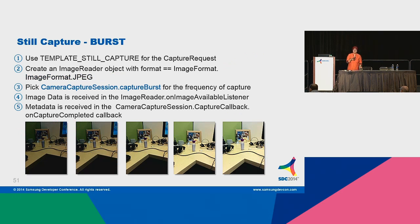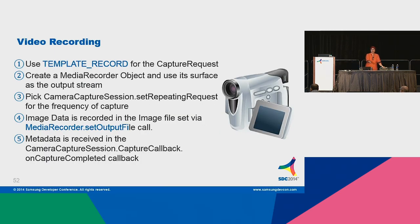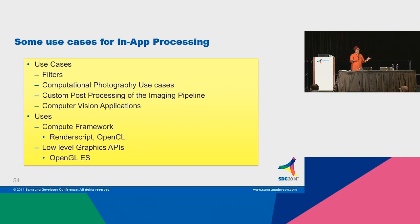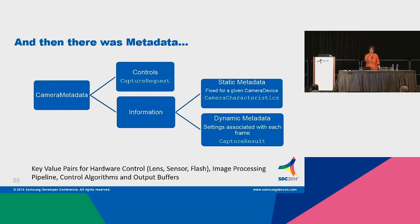Burst capture — I took some pictures with the Nexus 5 phone and have some sample apps running if anybody is interested in a demo later. Video recording is just a different set of parameters to choose. For in-app processing, it's really what you want to do — we're already very familiar with filters; everybody likes to put their filters before uploading a picture to Instagram or Facebook. Custom post-processing of the imaging pipeline. There is static metadata and dynamic metadata, and there are different classes. Once you open the Java doc and look at the API, there's any number of fields for what kind of metadata can be queried and returned.